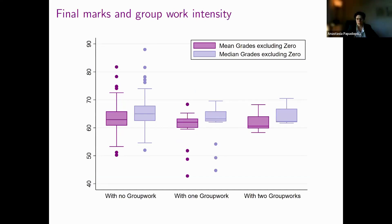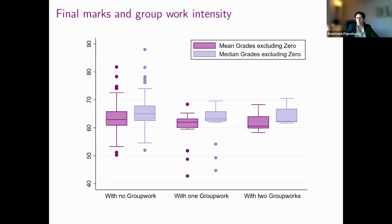We also wanted to understand if there is any such pattern emerging due to the different intensity of group work. So what happens if a module has more than one group work assessment? We see that it seems that modules with two group work assessments have lower median average and median grades compared to the ones with one group work, and then compared with the ones without group work. So it seems that intensity plays a role and affects slightly differentially the overall final outcomes.